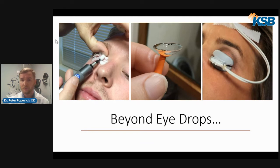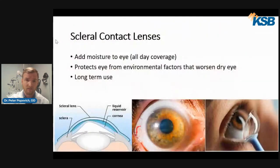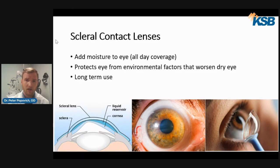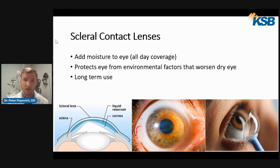Moving beyond eye drops, we now have more tools for treating dry eye. One of these is a specialized contact lens that covers the entire eye, allowing you to have moisture on the eye throughout the day. You can see in the lower left portion of the screen a little reservoir pool that the contact keeps on the eye throughout the day. This also protects the eye from environmental factors that worsen dry eye and can be used long term.